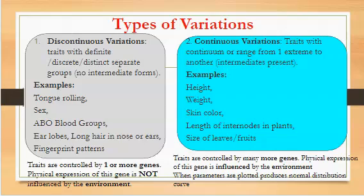These are traits that are basically controlled by more genes — more genes play a role in the physical expression, what we see and observe. These many genes that control these variations are also influenced by the environment, and that's a difference from what we have in discontinuous variations.